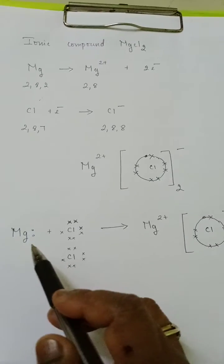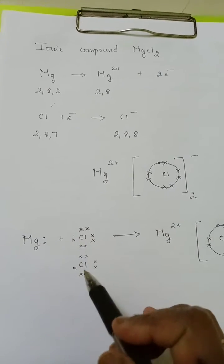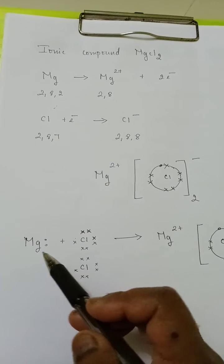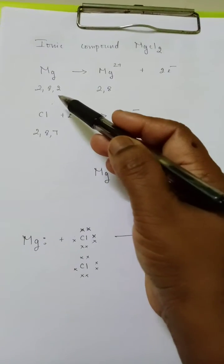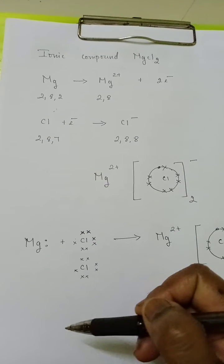We are going to see how we got that. For magnesium, I have mentioned only the outermost shell electrons. Magnesium has two electrons as we discussed, and chlorine has seven electrons in the outermost shell.